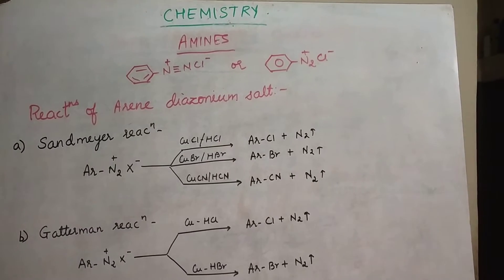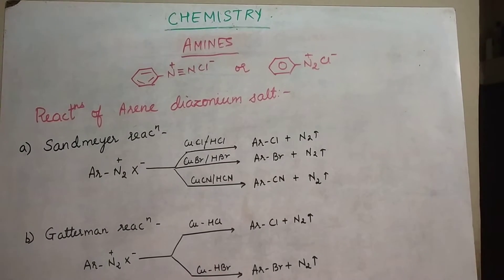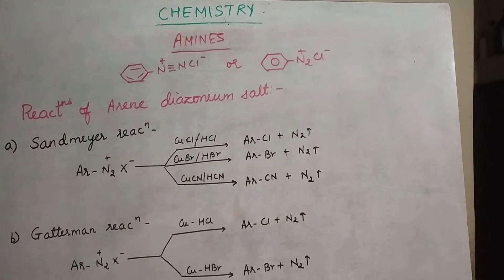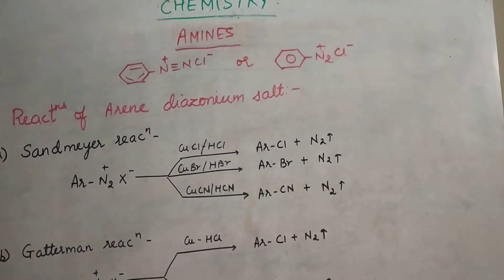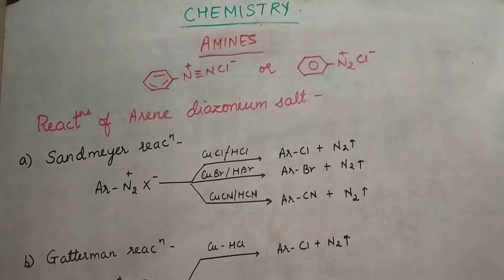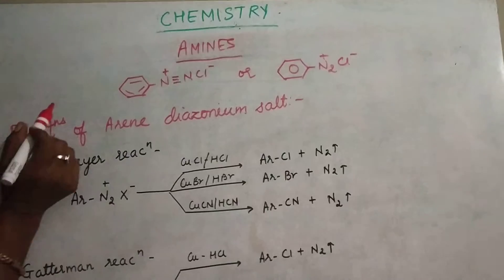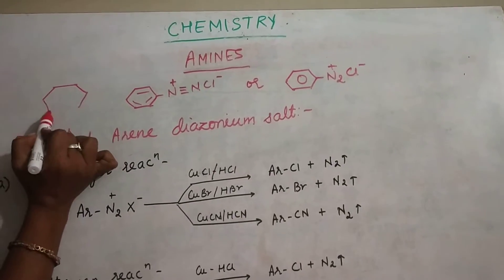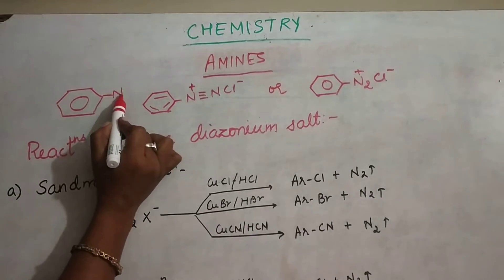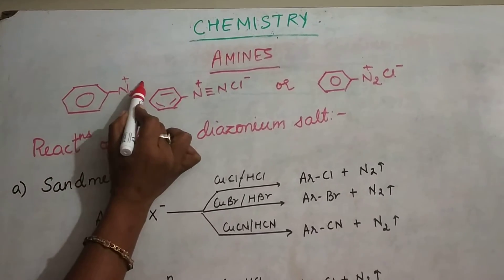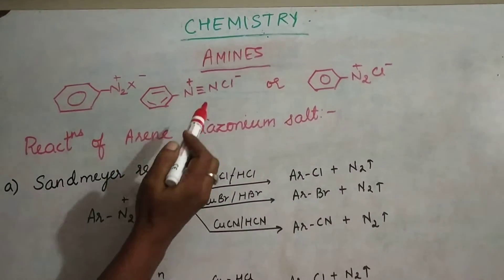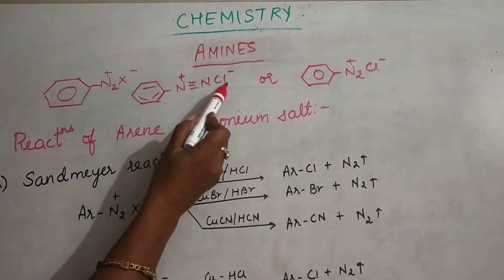In the amines chapter, we have to continue with the reactions of amines. Last time we saw the preparation of diazonium salt. Diazonium salt has this particular formula. Generally, diazonium salt can be written with the benzene ring with N2+ and then X−. This becomes diazonium salt. Here we are particularly using chloride ion.